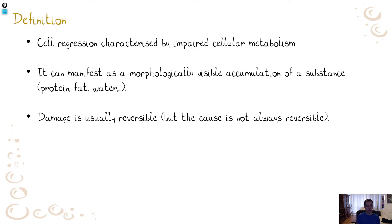Dystrophy is a type of cell regression. It is characterized by impaired cellular metabolism, meaning there is some insult that damages the cell. The insult can be congenital or acquired, external or internal. It damages the cell, but it is not severe enough to kill the cell — only severe enough to impair cellular metabolism. It can manifest as a morphologically visible storage accumulation of a substance — it can be fat, protein, water, glycogen, or something else. If an insult damages lipid metabolism, for example, it will be manifested as a storage of fat.